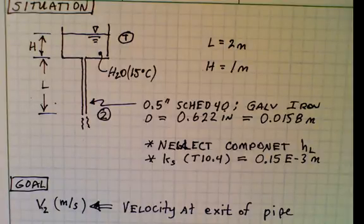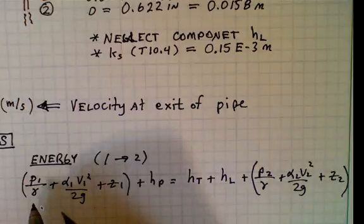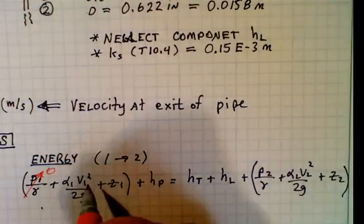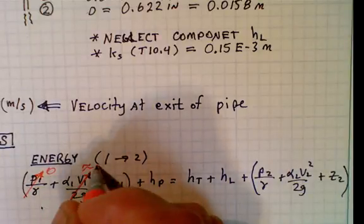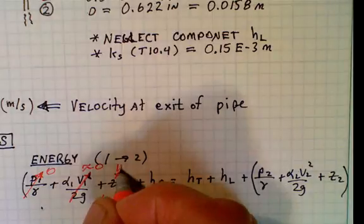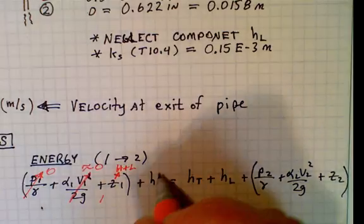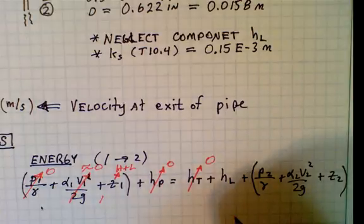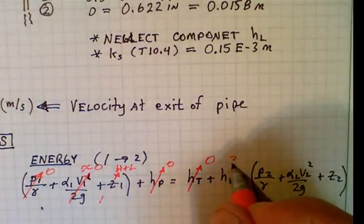Since the goal is velocity at the exit of the pipe, let's go ahead and apply the energy equation. The pressure at 1 is 0 gauge. The velocity at 1 is approximately 0. The elevation at 1 is H plus L. There's no pumps, no turbines. There is head loss, and I don't know what that is.